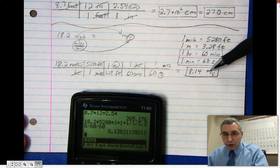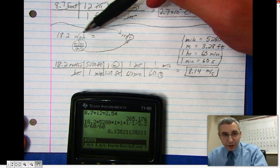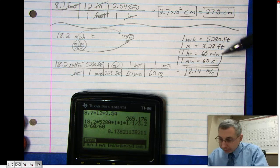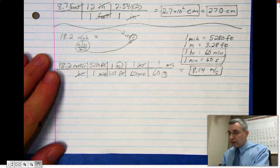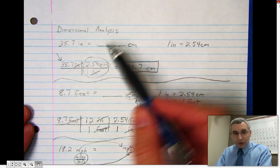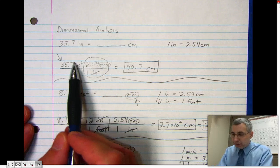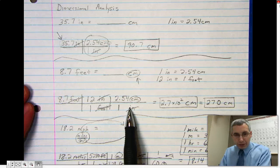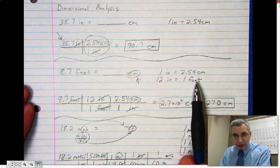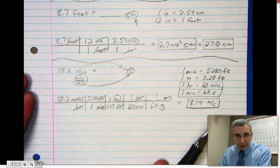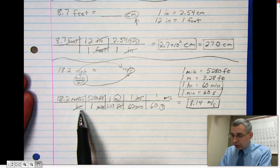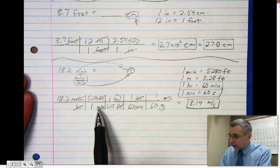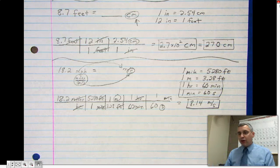We've converted from 18.2 miles per hour to 8.14 meters per second. This is the kind of thing you may have to do at the beginning of a physics problem to convert from miles per hour to meters per second before you can continue on and solve the problem. That is a quick summary of dimensional analysis. You've seen three different problems: a simple one-step problem, a two-step using two equivalent statements or conversion factors, and then a multiple-step that began with miles per hour. That concludes the video review of dimensional analysis.